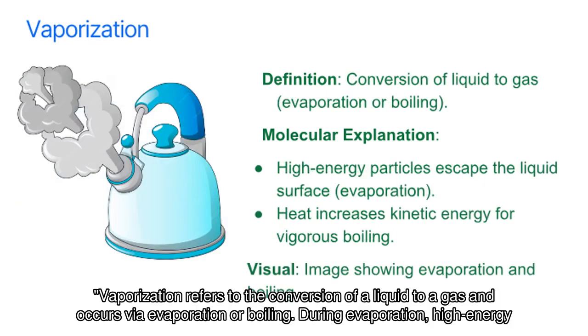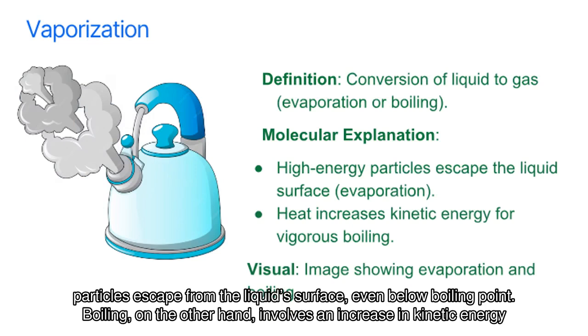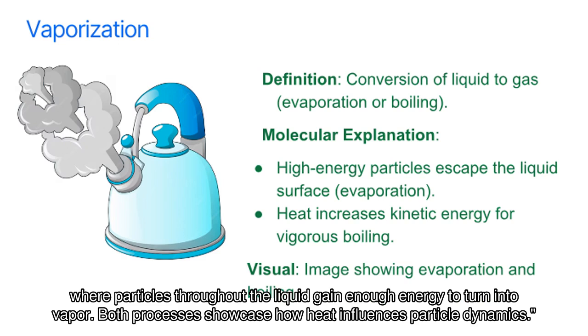Vaporization refers to the conversion of a liquid to a gas and occurs via evaporation or boiling. During evaporation, high-energy particles escape from the liquid surface, even below boiling point. Boiling, on the other hand, involves an increase in kinetic energy where particles throughout the liquid gain enough energy to turn into vapor. Both processes showcase how heat influences particle dynamics.